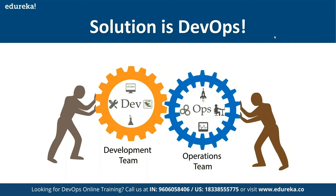The second pillar is continuous monitoring. No infrastructure is error-proof and no application is bug-free. A smart organization takes preventive actions before an issue becomes a disaster. Continuous monitoring means monitoring each and every aspect of your organization — infrastructure, servers, databases, routers, switches, printers, jobs — anything that is part of your infrastructure. The third principle of DevOps is automation.